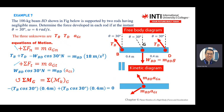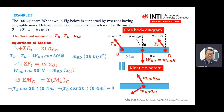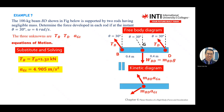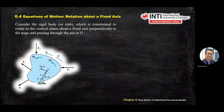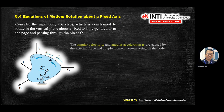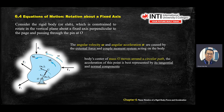You solve the question by solving the simultaneous equations. Next, we move to Section 6.4: Equation of Motion for Rotation about a Fixed Axis. Same procedure — the rest you can read. I will just highlight the important steps. You already know angular velocity and acceleration.